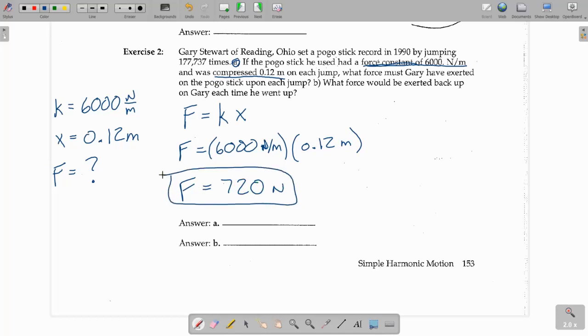Now, part B, it says, what force would be exerted back up on Gary each time you went up? So, this is actually going to take us back to Newton's laws. Newton's third law states that for every force, every action force, there is an equal and opposite reaction force.